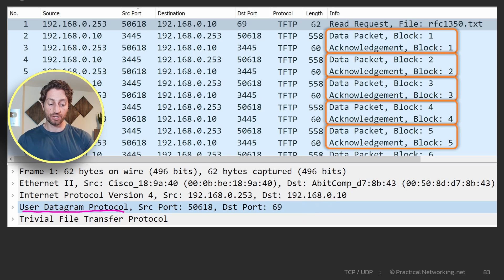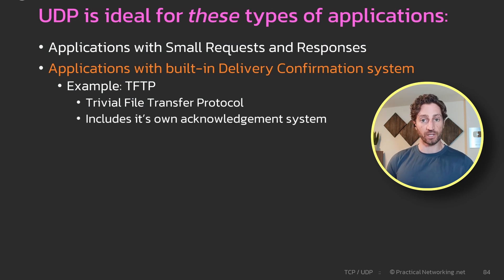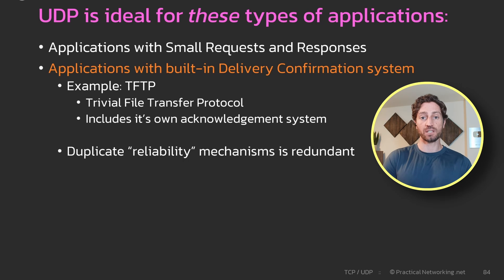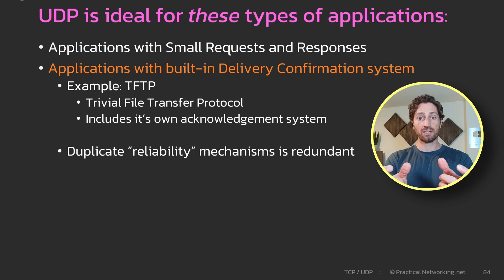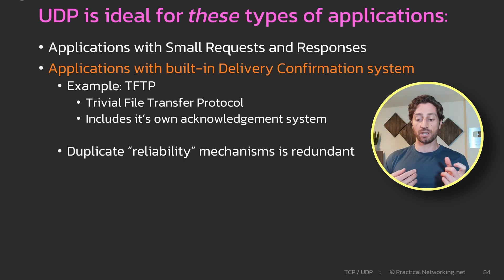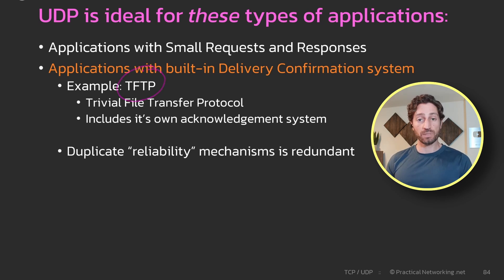This transfer is happening over UDP, and the confirmations are happening within the TFTP application itself. TFTP has its own acknowledgement system for data delivery, so we don't need TCP's. In fact, using multiple reliability mechanisms ends up being redundant — both mechanisms work against each other. What will happen is a packet gets dropped, then both mechanisms ask for that packet again, and the sender sends it once for the application's reliability system and again for TCP's. That is why if an application has a built-in delivery confirmation system, it should be done over UDP instead of TCP.